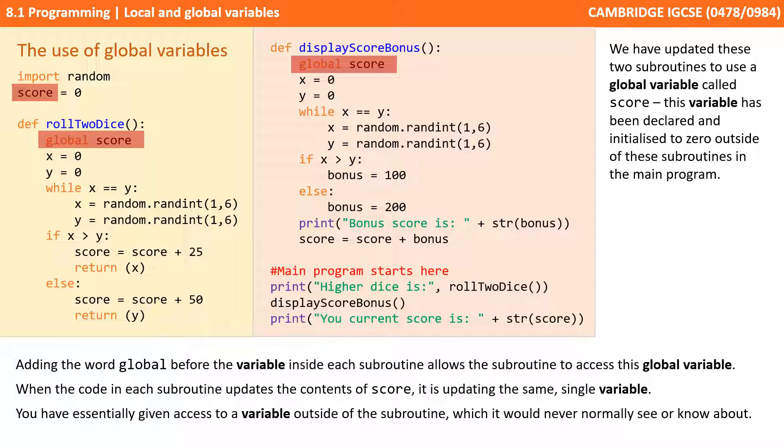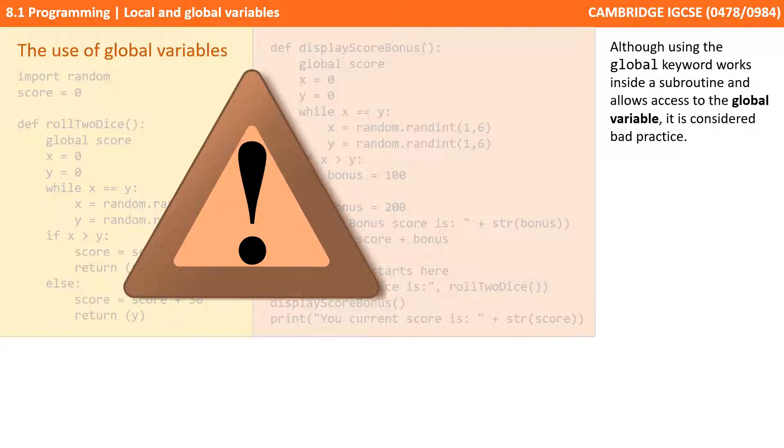You've essentially given access to a variable outside the subroutine, which you would never normally see or know about. Although using this global keyword works inside a subroutine and allows us access to the global variable score, it's actually considered quite bad programming practice.